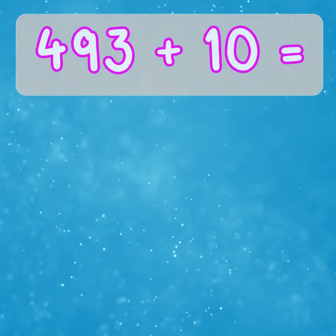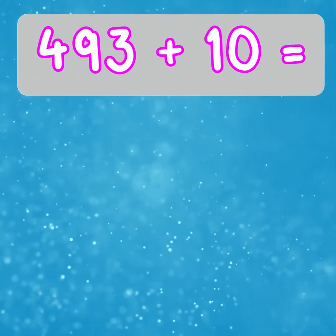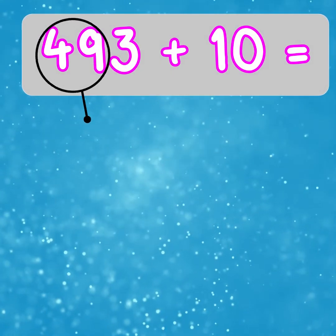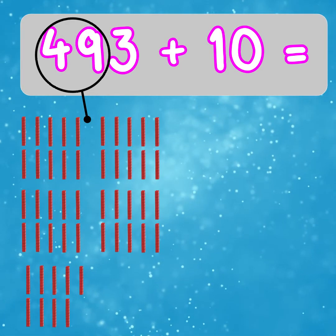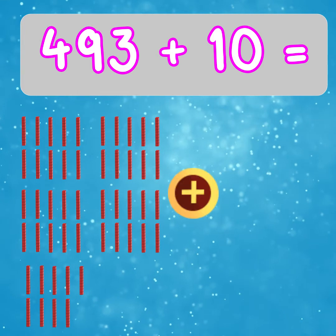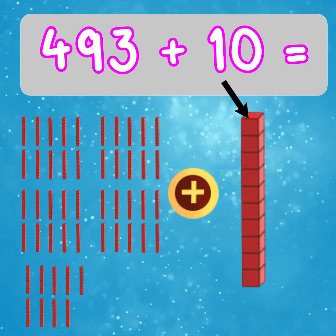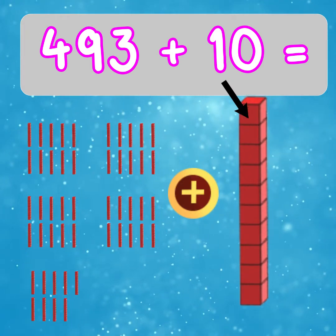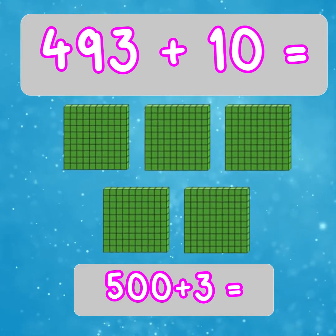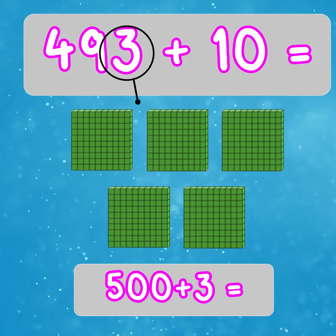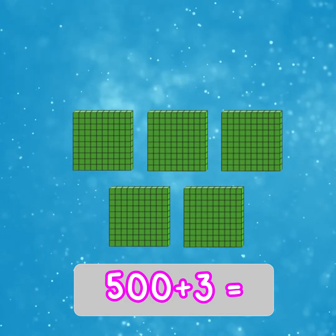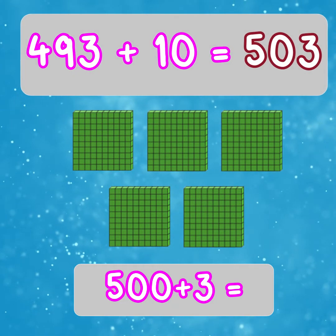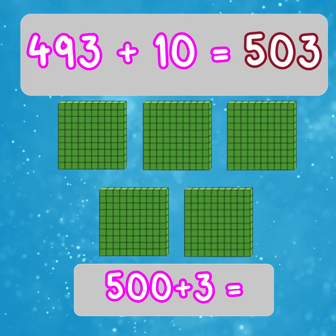Let's try a larger number — 10 more than 493. If we look at the hundreds and tens place value and convert it into just tens, there are 49 tens, which is the same as 490. 49 tens add 1 ten would equal 50 tens, or 500. Then we add back on the 3 ones, which do not change when adding tens. So 493 add 10 equals 503.